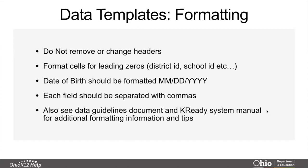The date of birth has to be formatted with the month as a two-digit code, the day as a two-digit code, and the year as a four-digit code. We use the CSV format — comma-separated formatting for that. If there are questions about that, there's information in the data guidelines manual that can walk you through that. We also have some help files on how to create these comma-separated files as well as the leading zeros, so we want to make sure that you format your information in the correct way to get it in the system.